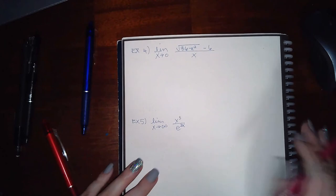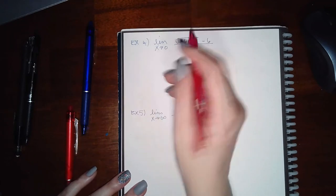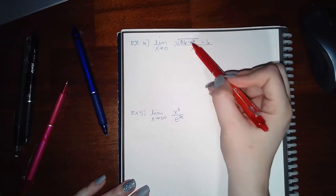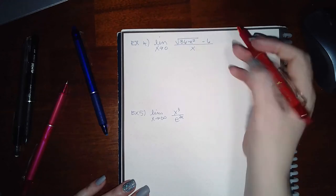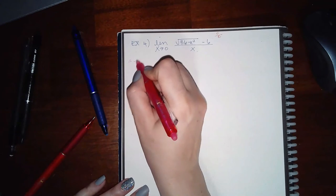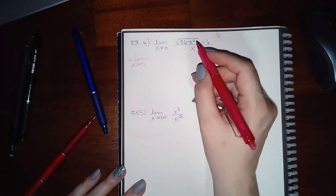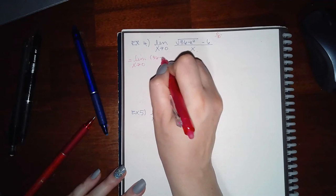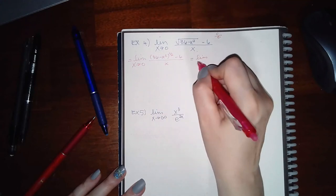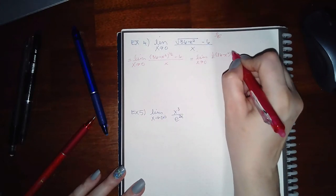For Example 4, let's check if we need L'Hopital's Rule. Plugging in 0: sqrt(36 - 0) = 6, and 6 - 6 = 0 in the numerator; plugging 0 into the denominator also gives 0. That's the indeterminate form 0/0, so we apply L'Hopital's Rule. I'll rewrite the numerator as (36 - x²)^(1/2) - 6 over x before differentiating.